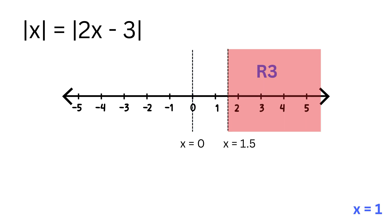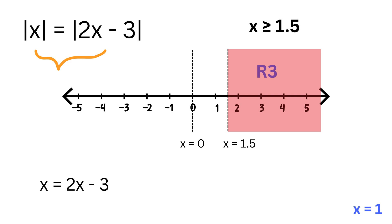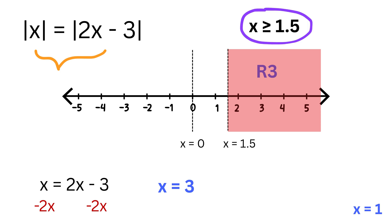Region 3: when x is greater than or equal to 1.5, both inside expressions are non-negative, so each absolute value becomes the expression itself. This means x equals 2 times x minus 3. Subtract x from both sides to get minus x equals minus 3, then multiply by minus 1 to get x equals 3. Checking the region condition: 3 is indeed greater than or equal to 1.5, so this candidate is also valid.